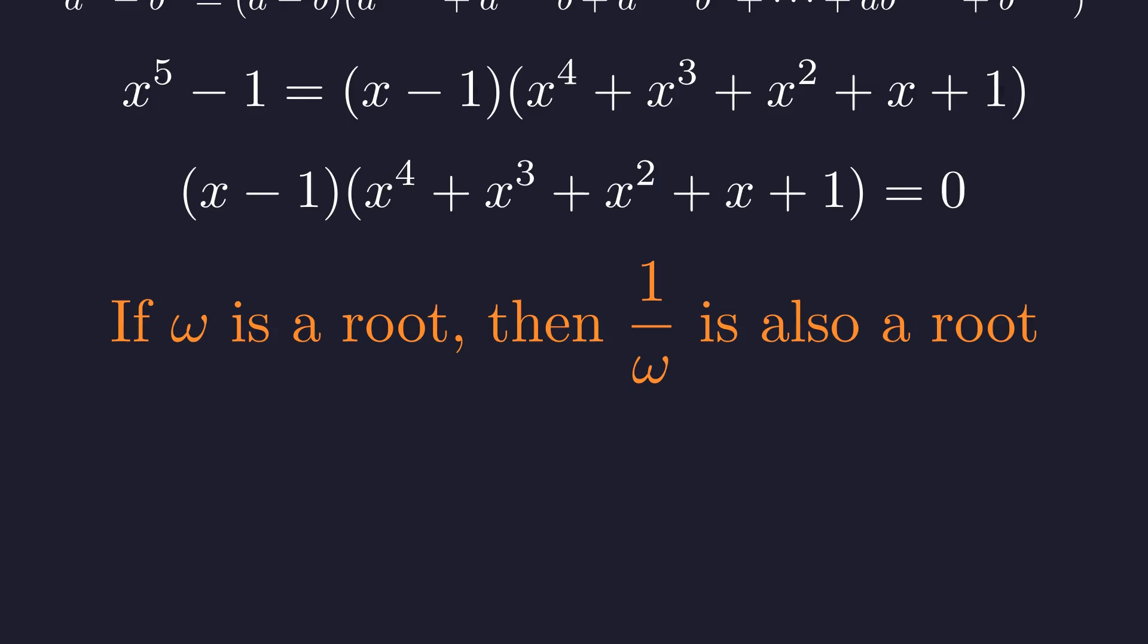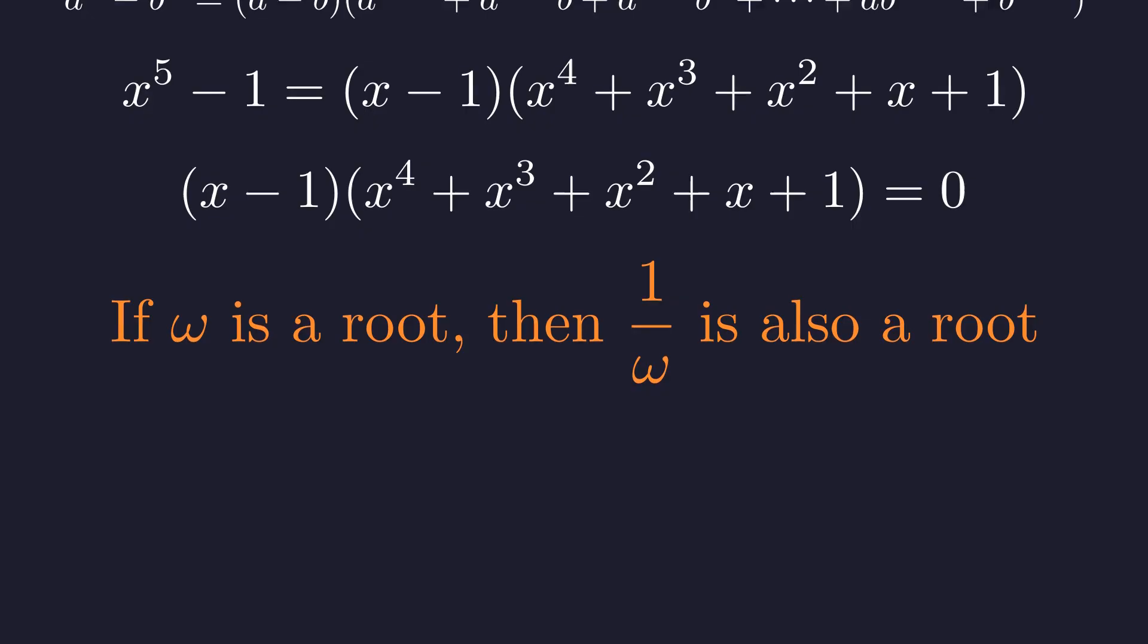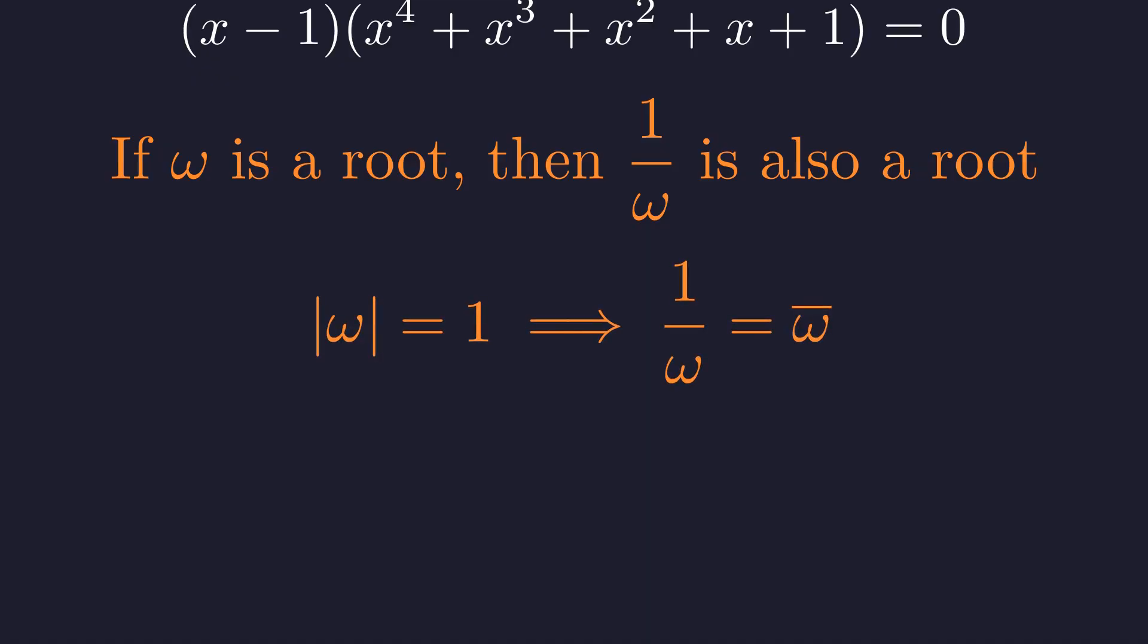For any root omega on the unit circle, its reciprocal, 1 over omega, is also a root. This is because all our roots have magnitude 1. When the magnitude of omega is 1, the reciprocal equals the complex conjugate. So our roots come in reciprocal pairs. A polynomial whose roots must come in these reciprocal pairs is called a reciprocal equation. And it is forced by this property to have this beautiful symmetric structure. So the symmetry we see in the algebra is not a random trick. It is a direct echo of the symmetry we saw in the geometry. And now we will use that very symmetry to crack it wide open.